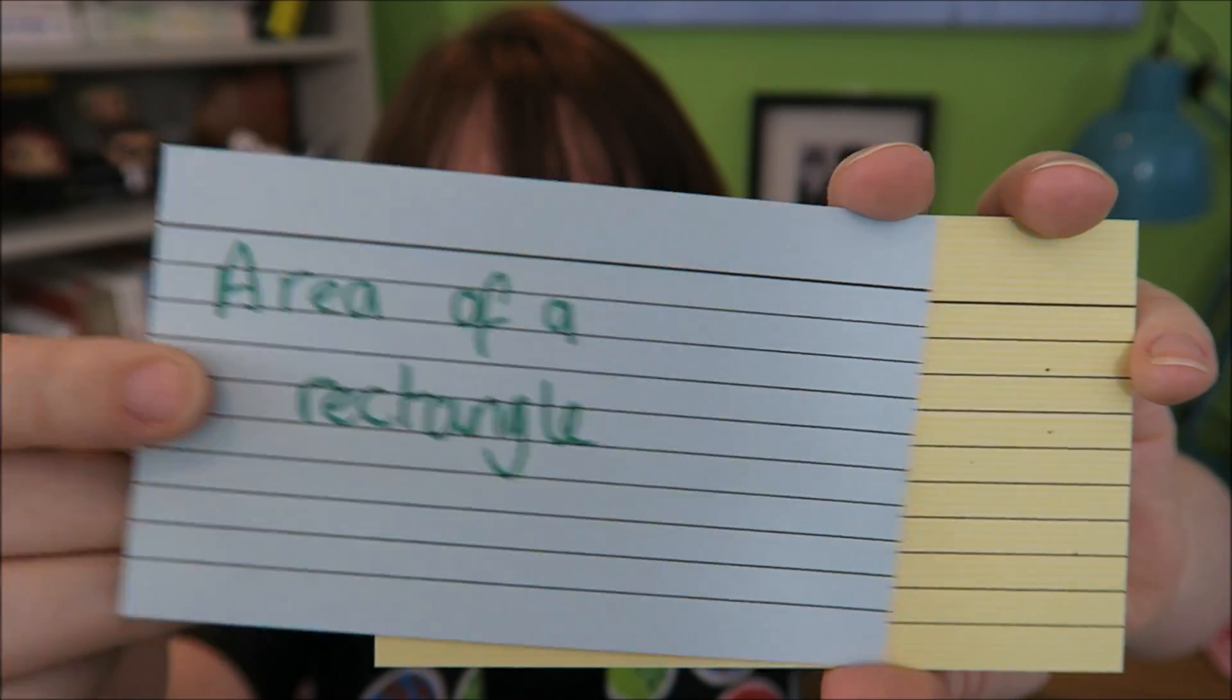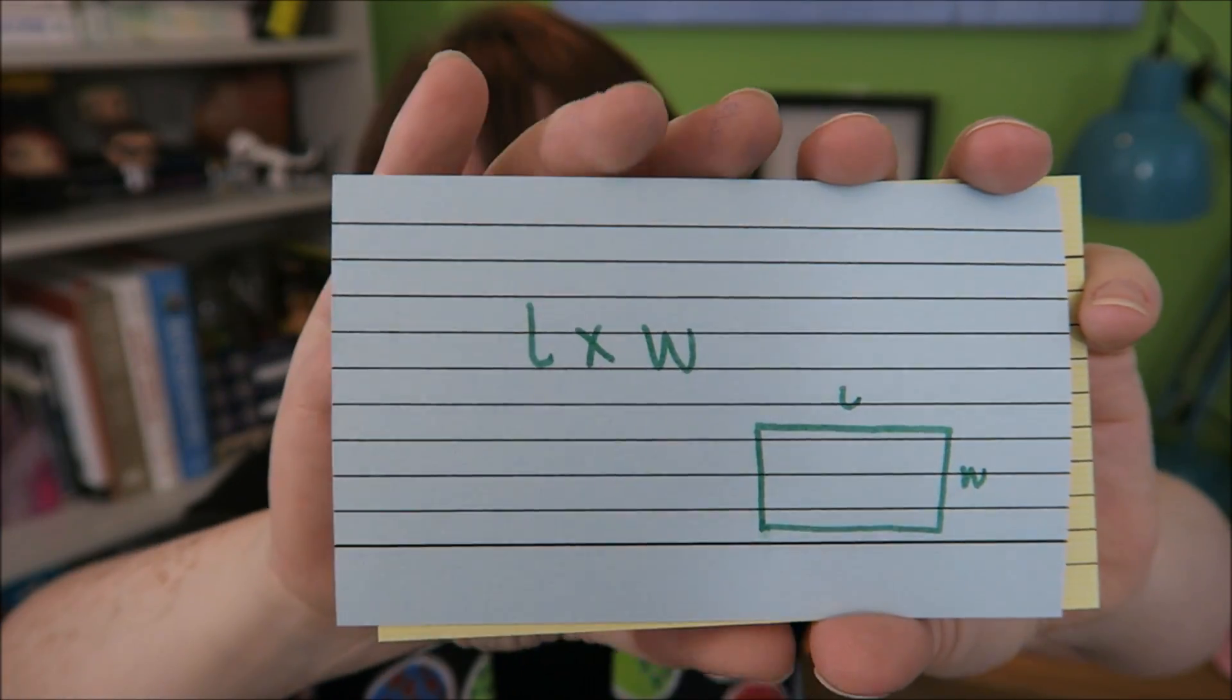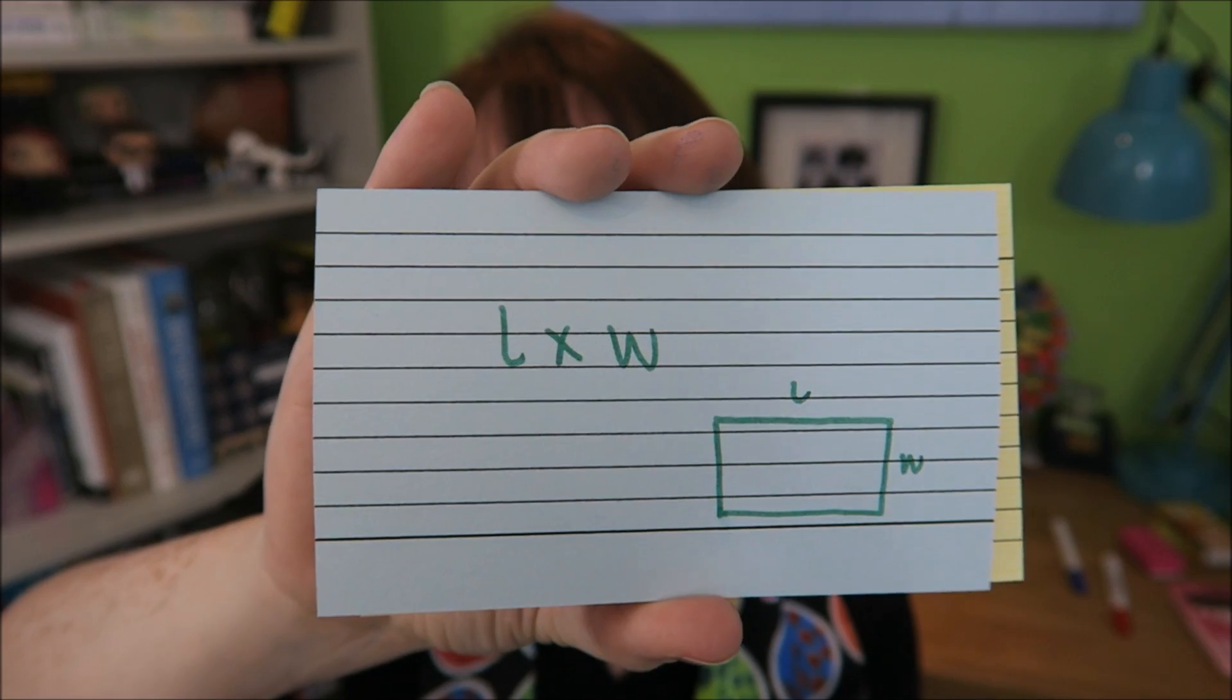Area of a rectangle. Nice, easy one here. That is length times width.